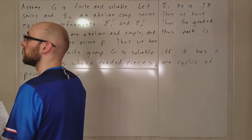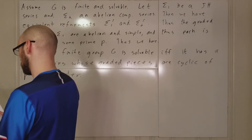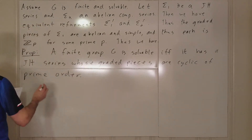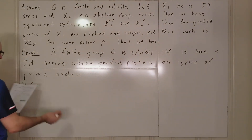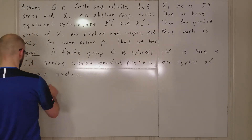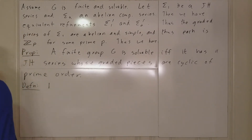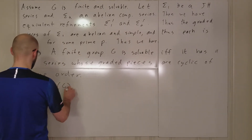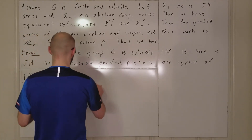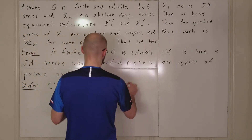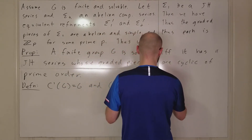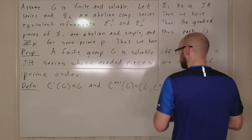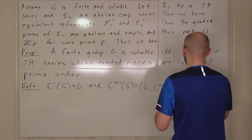Alright, let's switch gears and talk about something else. We're going to define C^1(G) to be G, and C^{n+1}(G) to be the commutator subgroup [G, C^n(G)], for n in the natural numbers.